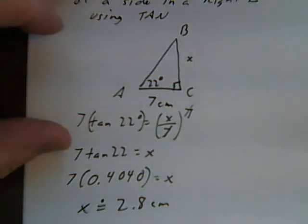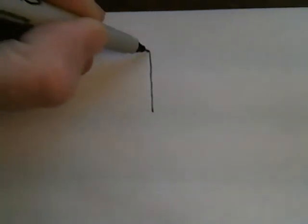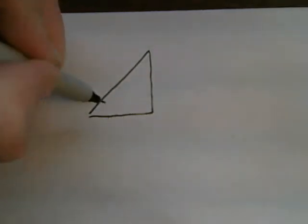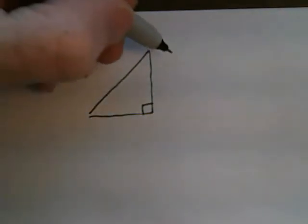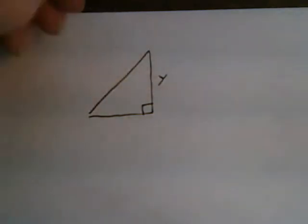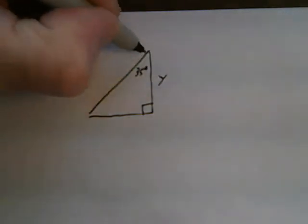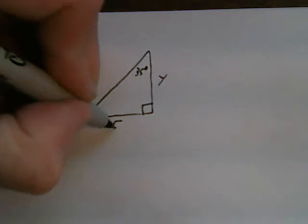Let's do an example where the unknown is on the bottom. So here I have another triangle. I'm going to have Y, 35 degrees, and 5 meters.